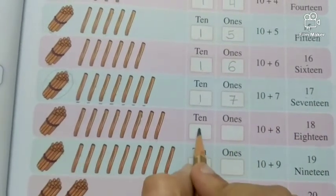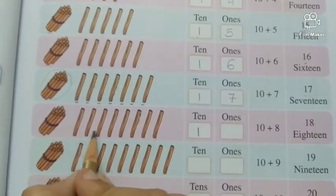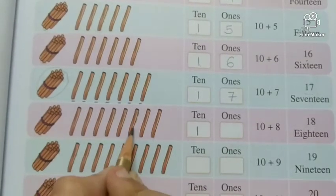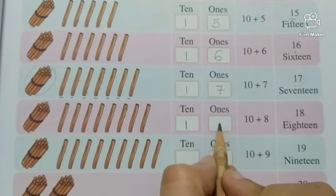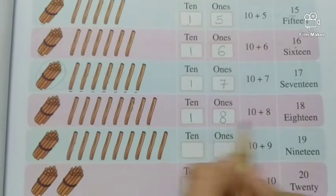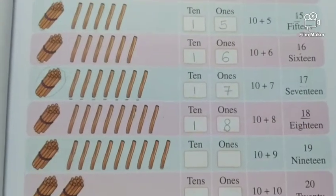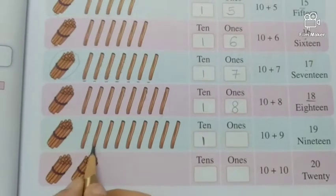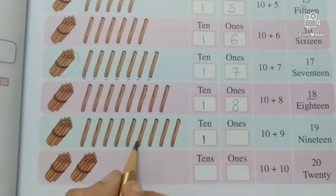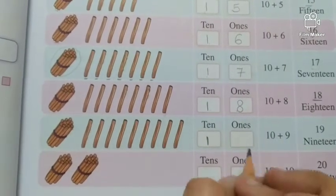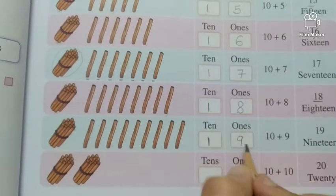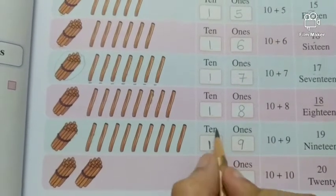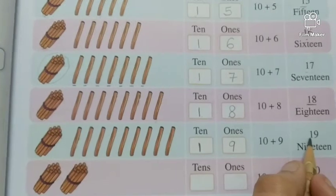1 tenth. 1, 2, 3, 4, 5, 6, 7, 8. 8 ones. 1, 8, 18. Next, 1 tenth and 1, 2, 3, 4, 5, 6, 7, 8, 9. How many ones? 9 ones. Which means, 1 tenth and 9 ones is equal to 19.